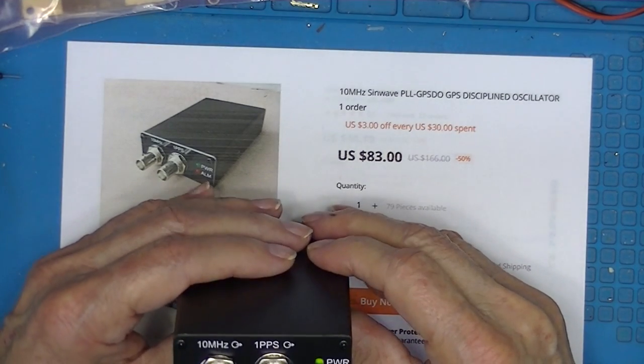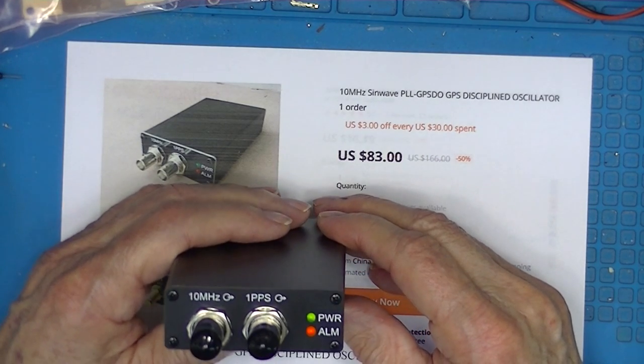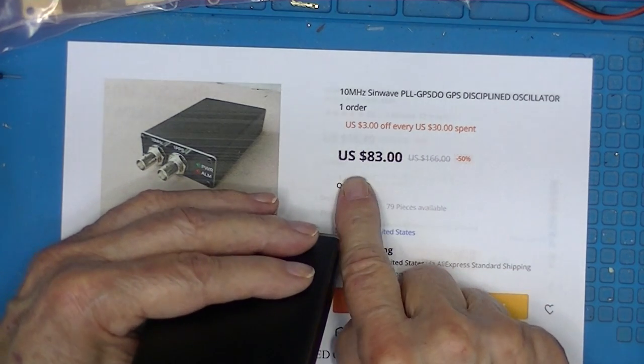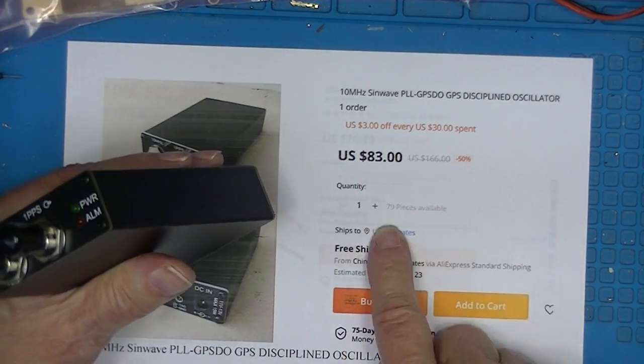This is a GPS disciplined oscillator. It came from AliExpress, $83 free delivery.